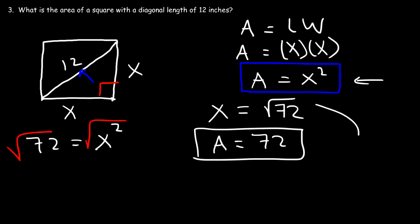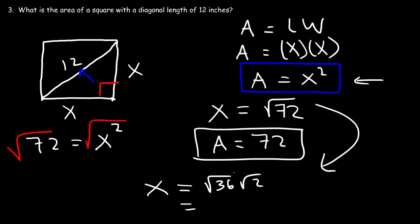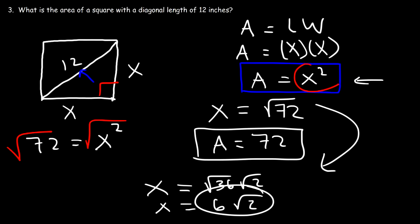By the way, if you want to simplify this radical, you can say that 72 is 36 times 2, and the square root of 36 is 6. So x is 6 square root 2. But the area is x squared, and we can see that x squared is 72, which means the area is 72 square inches in this example.